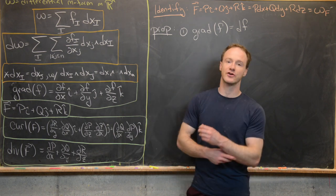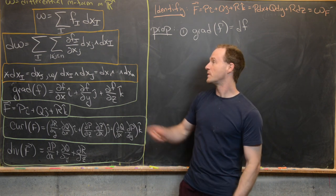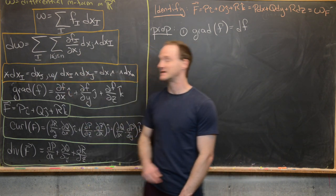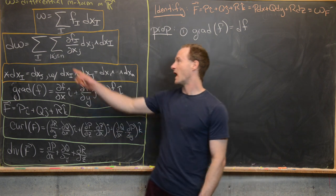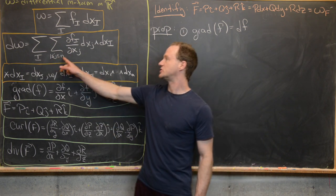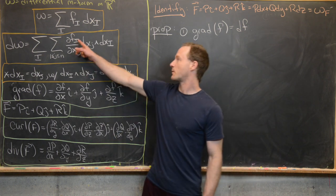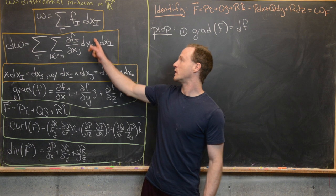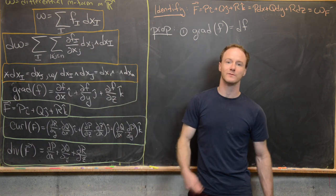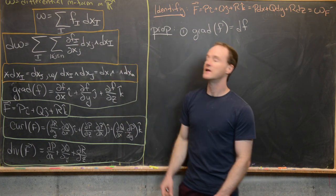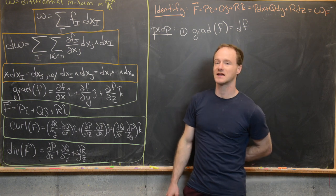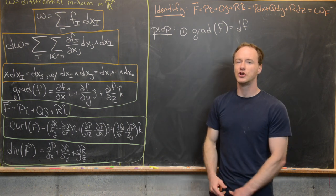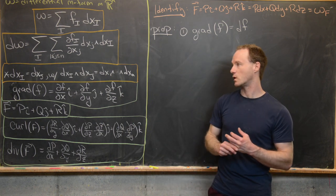The exterior derivative of this m-form, which we'll call dω, is going to be the sum over the same set of multi-indices, and then we sum from j going from 1 to n, taking the partial of f_i with respect to x_j. Then we wedge the elementary one-form dx_j into the elementary m-form dx_I, giving us an elementary m+1 form. When you put all of this together, you have a differential m+1 form.